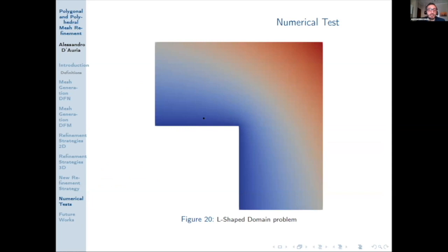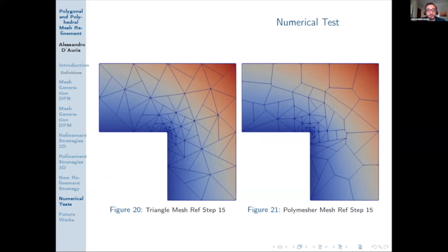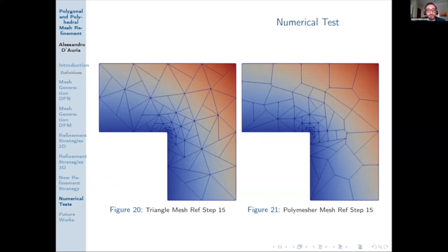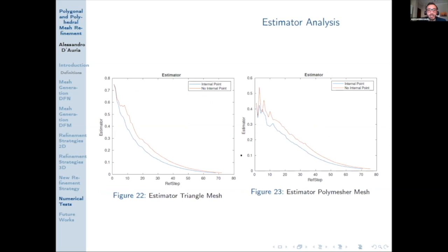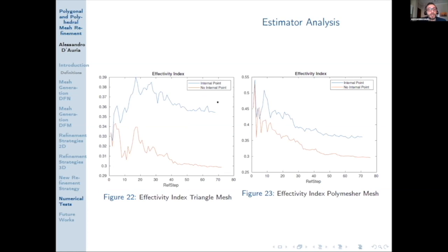We tested our refinement strategies on the L-shaped domain with two starting meshes: one triangular and the other polygonal. This shows the mesh after 50 steps, 20 steps, and 25 steps. We can see that both algorithms maintain the right rate of convergence. The estimators at convergence have the same behavior with and without adding the internal point. However, looking at the effectivity index, adding the internal point brings us closer to one compared to the case without the internal point.